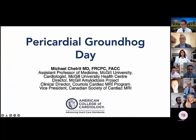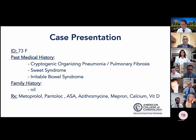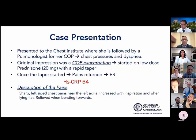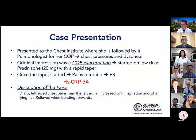Thank you. I have the pleasure of presenting the first case: a 73-year-old lady with a history of cryptogenic organizing pneumonia, pulmonary fibrosis, Sweet syndrome, and irritable bowel syndrome. She presents to the Chest Institute with chest pressures and dyspnea, initially felt to be a COP exacerbation, and started on low-dose prednisone with a rapid taper. However, once the taper began, her pain recurred and she presented to the emergency room. Her high-sensitivity CRP was 54, and she described sharp, left-sided pain near the axilla, increased with inspiration and when lying flat, relieved when bending forward.